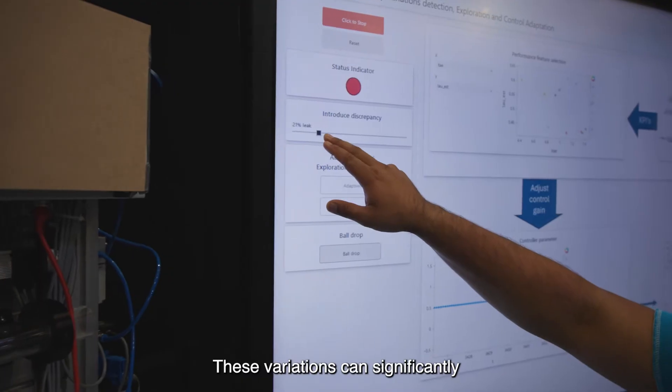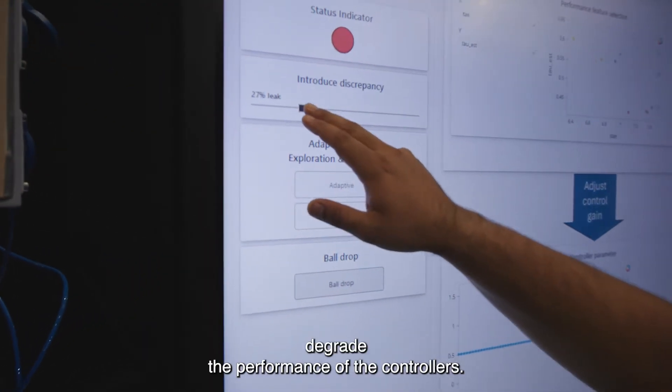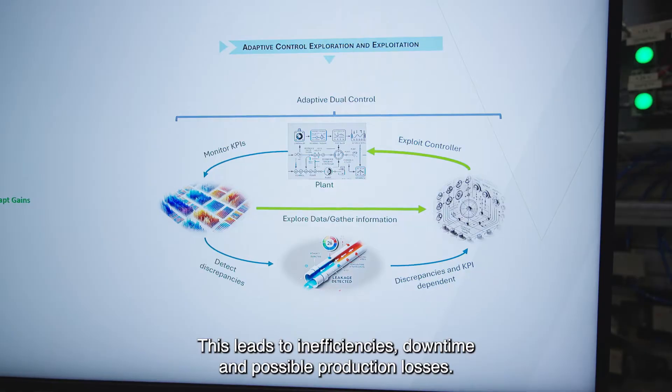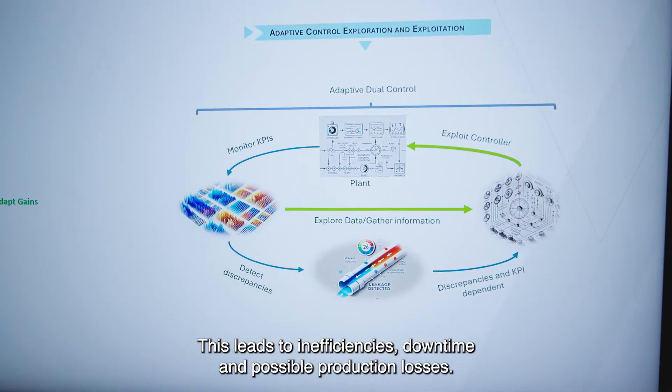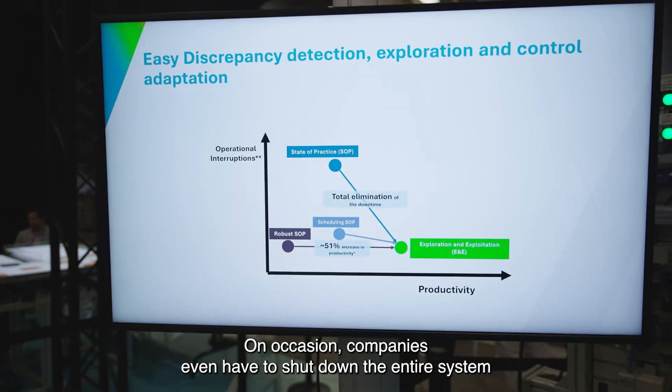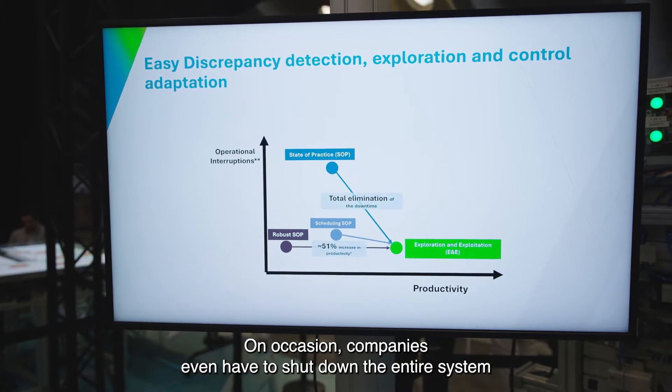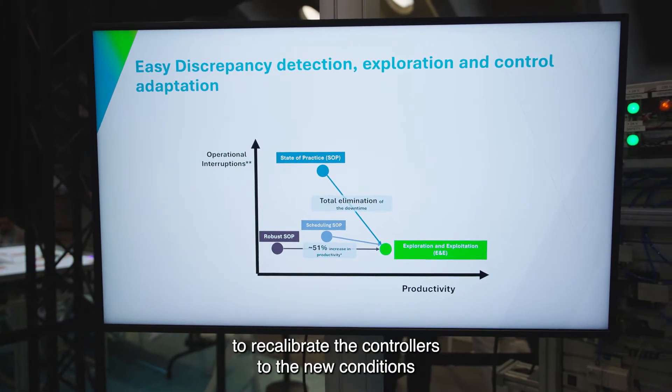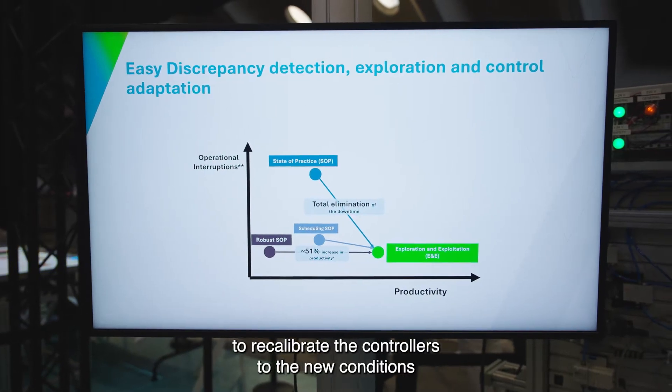These variations can significantly degrade the performance of the controllers. This leads to inefficiencies, downtime and possible production losses. On occasion, companies even have to shut down the entire system to recalibrate the controllers to the new conditions.